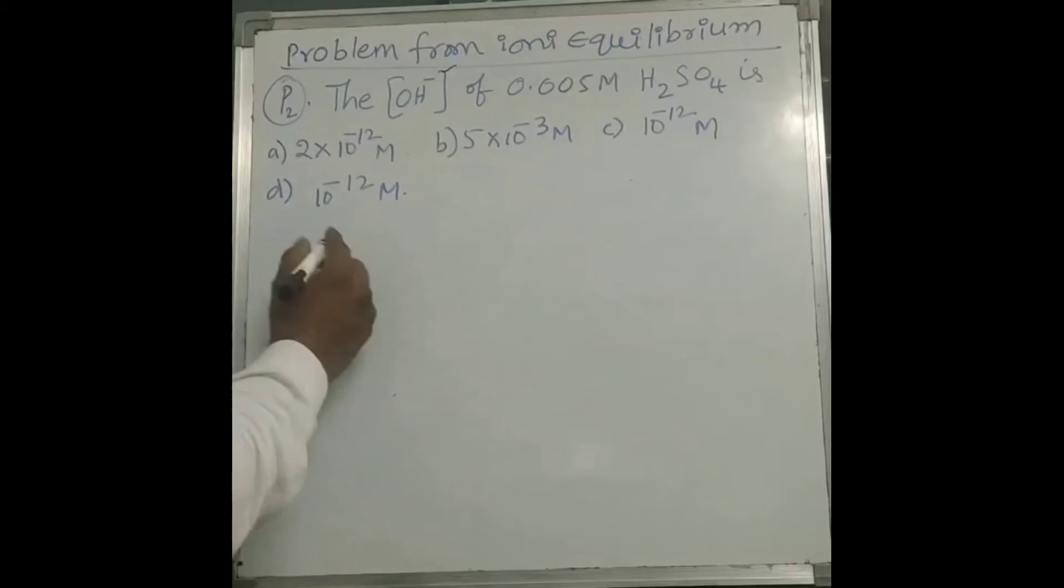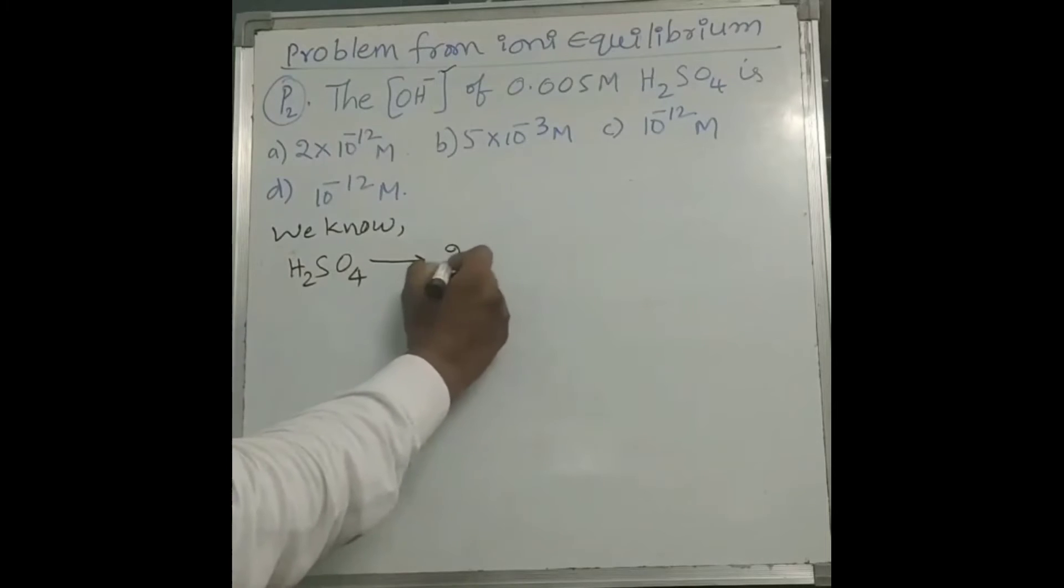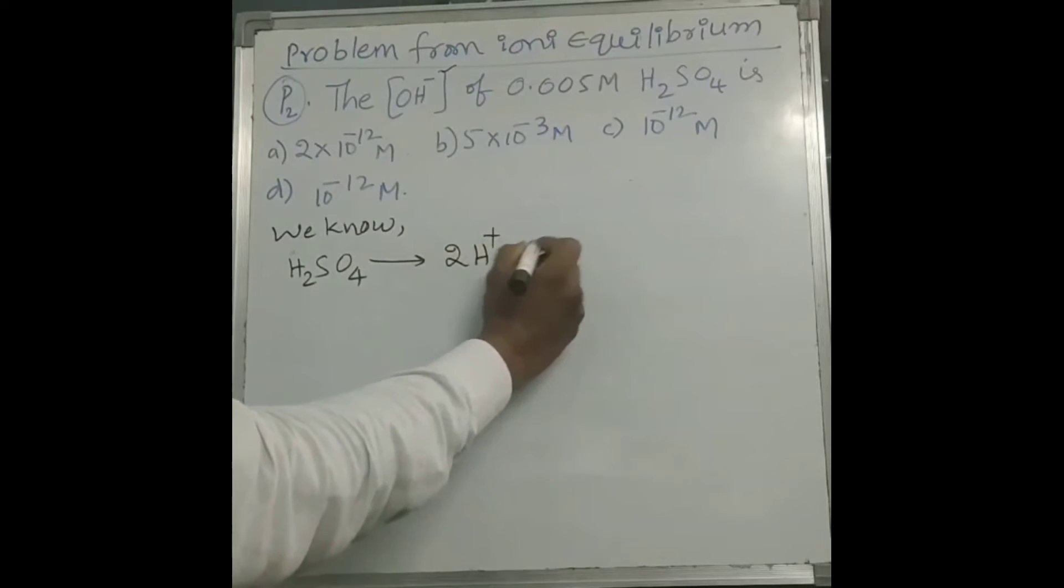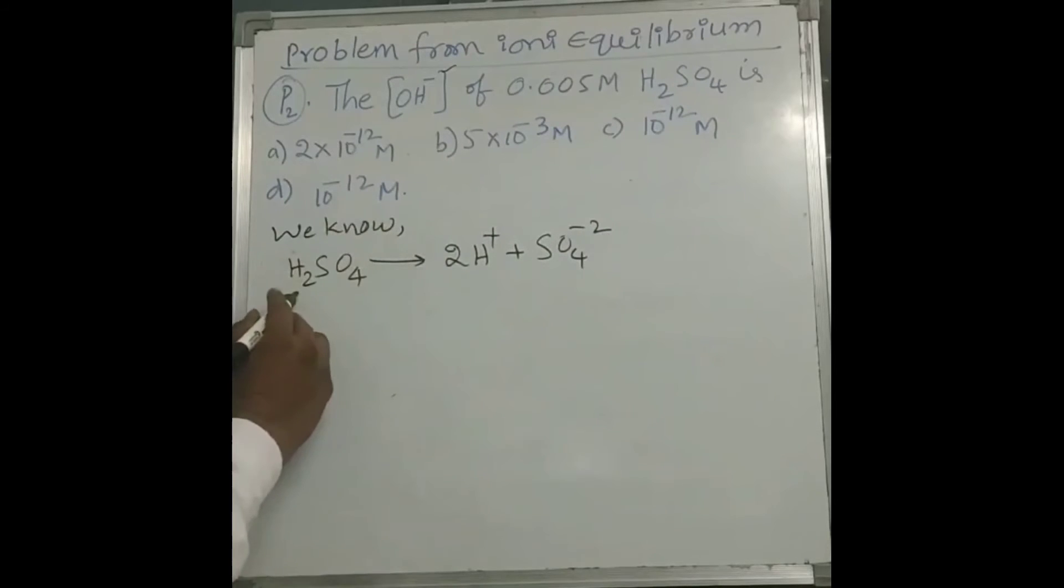See, we know how H2SO4 ionizes. H2SO4 ionizes as 2H+ ions and SO4-2 ions. What is the concentration of H2SO4?